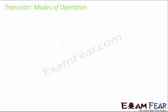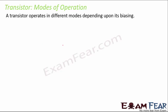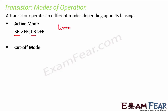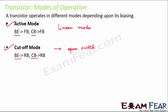A transistor operates in different modes depending on biasing. In active mode, both the base-emitter junction and collector-base junction are forward biased — also known as linear mode. In cutoff mode, both junctions are reverse biased, so the circuit behaves like an open switch with no current flow.